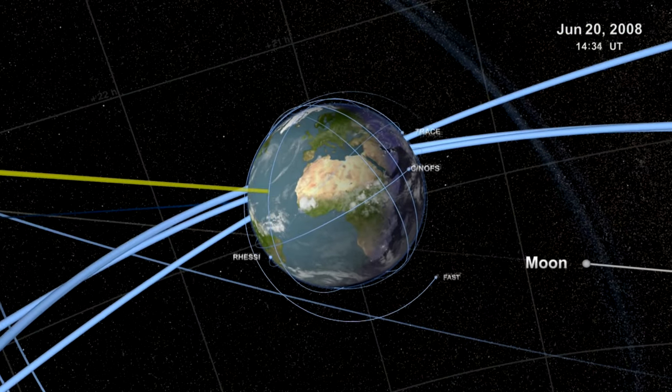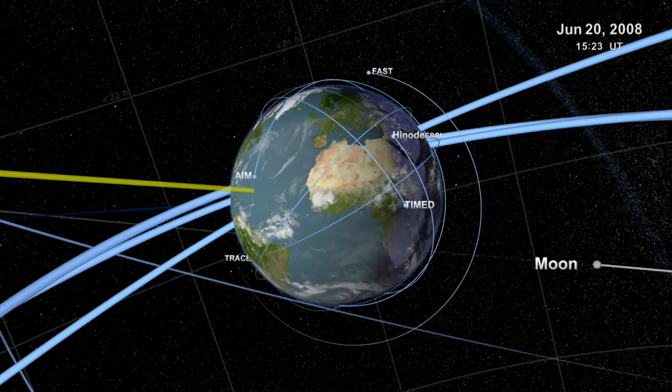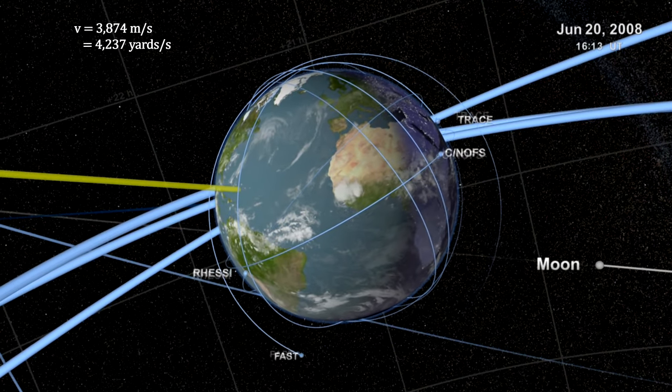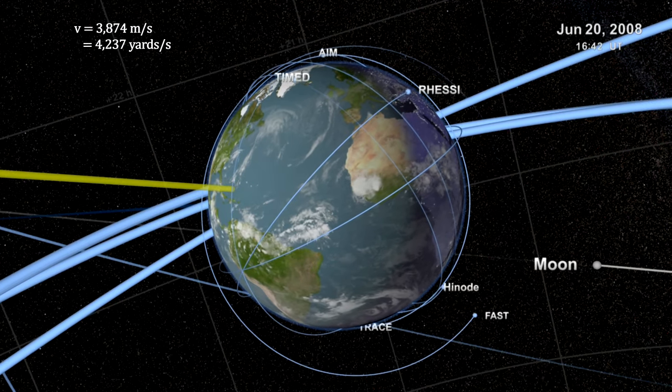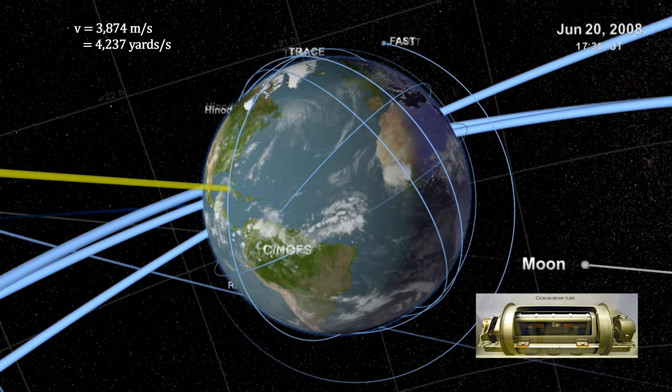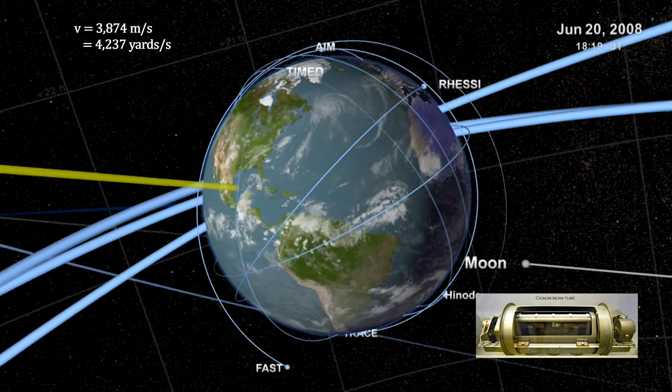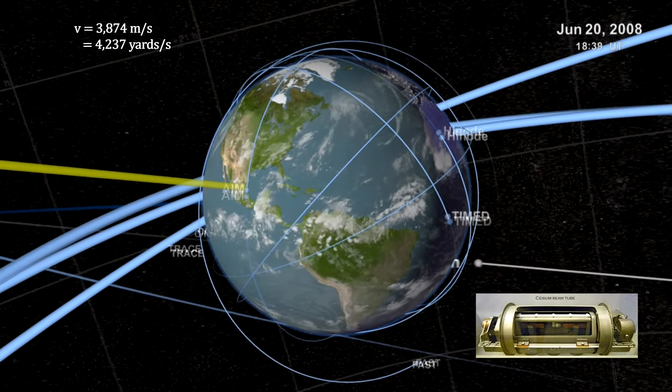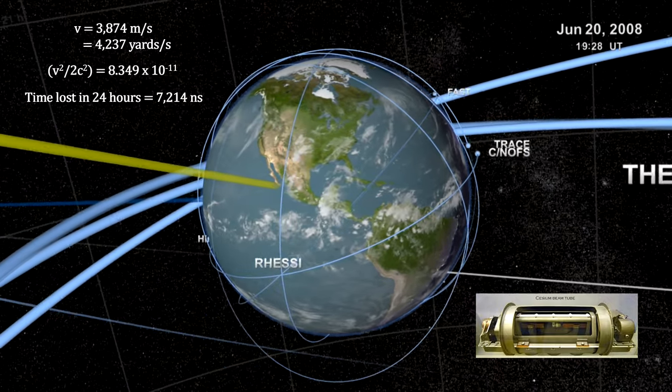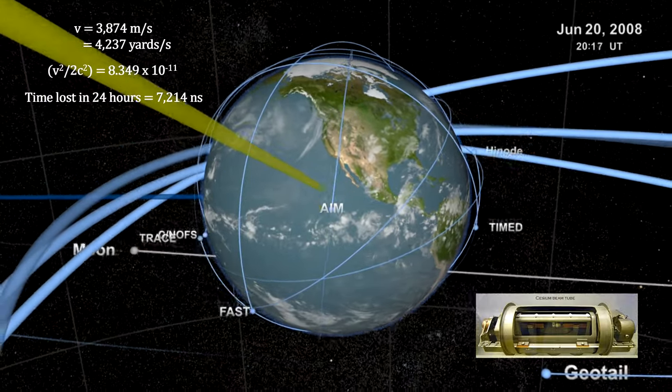But for faster-moving spacecraft, it can be quite significant and critically important. For example, orbiting GPS satellites travel at 3,874 meters per second with respect to the Earth. They use cesium atomic clocks to keep time. They measure time to within one second in 1,400,000 years. But these onboard clocks lose 7,214 nanoseconds a day due to time dilation.